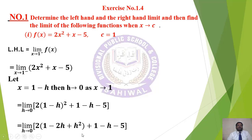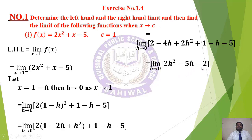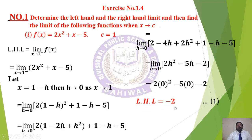After expanding and multiplying: limit h→0 of 2 − 4h + 2h² + 1 − h − 5. Combining like terms: 2h² − 5h − 2. Now applying the limit as h→0, we get the left hand limit equal to −2.